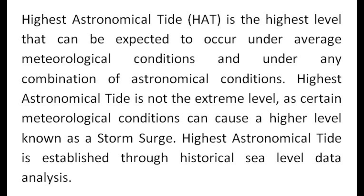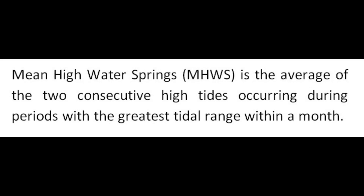Highest astronomical tide is the highest level that can be expected to occur under average meteorological conditions and under any combination of astronomical conditions. It is not the extreme level, as certain meteorological conditions can cause a higher level known as a storm surge. Highest astronomical tide is established through historical sea level data analysis. Mean high water springs is the average of the two consecutive high tides occurring during periods with the greatest tidal range within a month.